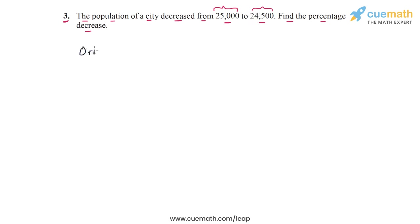We have the original population. The original population is given to be 25,000. Then we write the final population after the decrease. The final population is 24,500.